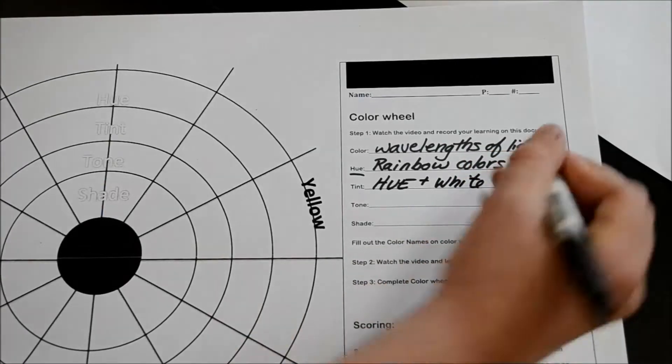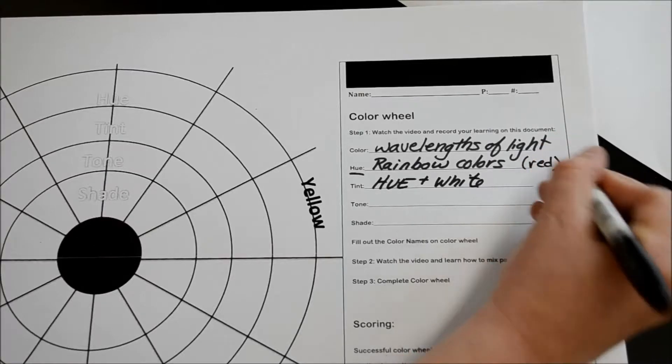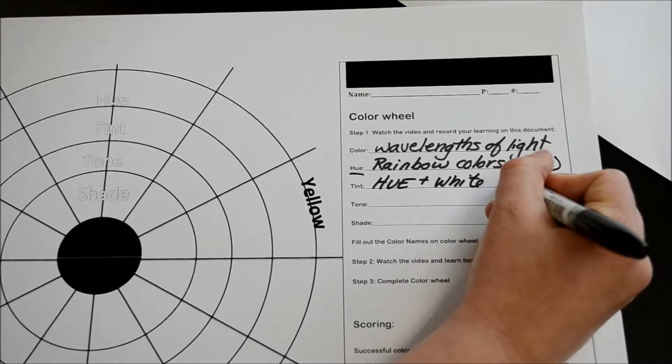So, for example, if we say that an example of a hue is red, an example of a tint is pink.